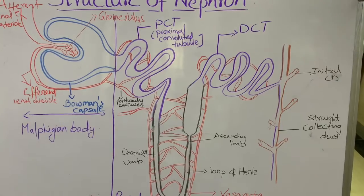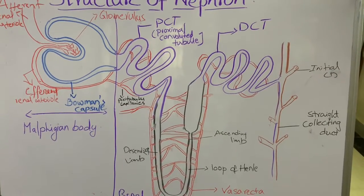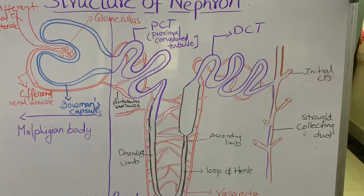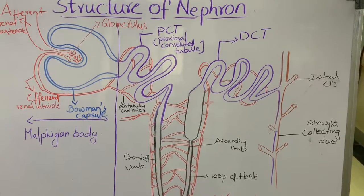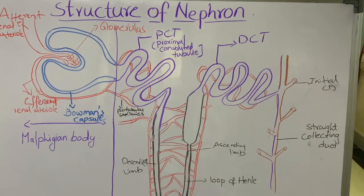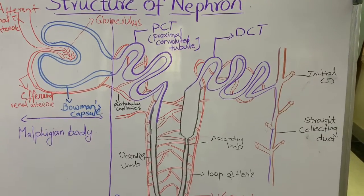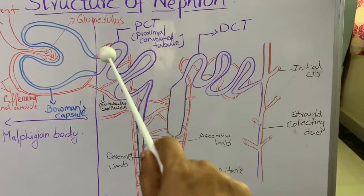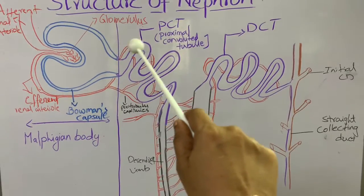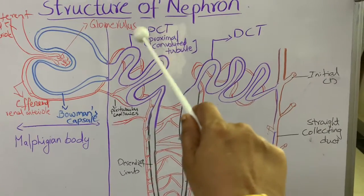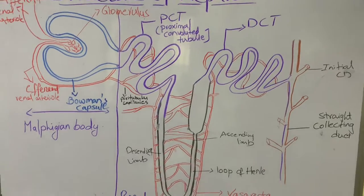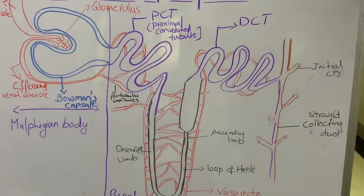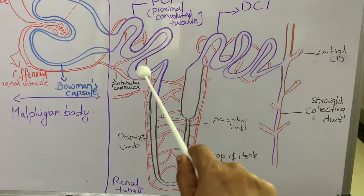The PCT is coiled because the space available is very limited — since there are approximately one million nephrons, the tubes become highly coiled so they can fit within a small area. The inner lining of the PCT contains brush border cells, which increase the surface area for absorption.